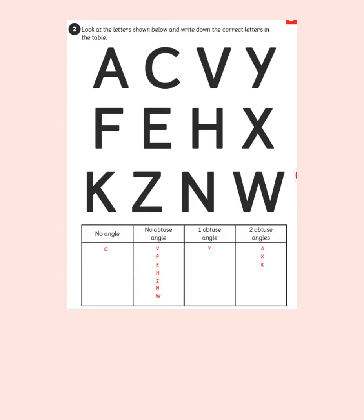You were asked to look at the letters shown and write down the correct letters in the table. C has no angle because it hasn't got any straight lines, and an angle is formed when two straight lines join. Letters with no obtuse angle were V, F, E, H, Z, N, and W. The only letter with one obtuse angle was Y, and there were three letters with two obtuse angles — those were A, as we saw in our Let's Learn earlier, X, and K.